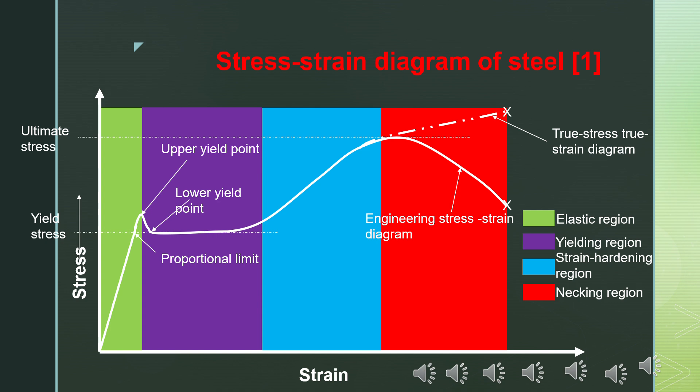In the necking region, the cross-sectional area of the specimen decreases rapidly and finally failure occurs. At the beginning of this region, a difference appears between the true stress-strain curve and the engineering stress-strain curve. The engineering stress-strain curve uses the initial length and initial cross-sectional area of the specimen, whereas the true stress-strain diagram tracks both the changing cross-sectional area and the changing length of the specimen.